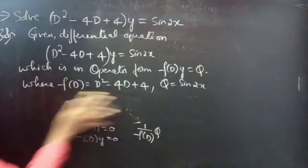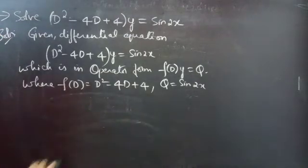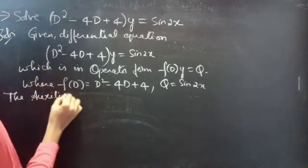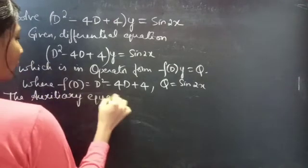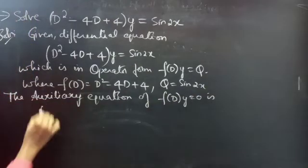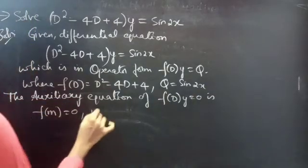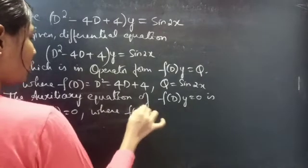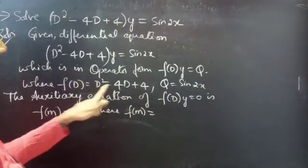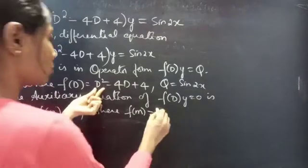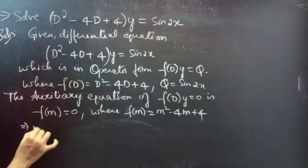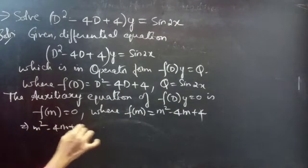Let us find the complementary function using the auxiliary equation. The auxiliary equation of f(D)·y = 0 is f(m) = 0, where f(m) is obtained by replacing differential operator D by m. Since f(D) = D² - 4D + 4, we get f(m) = m² - 4m + 4, so the auxiliary equation is m² - 4m + 4 = 0.